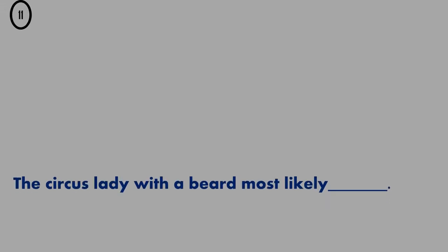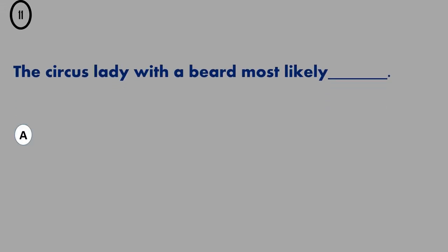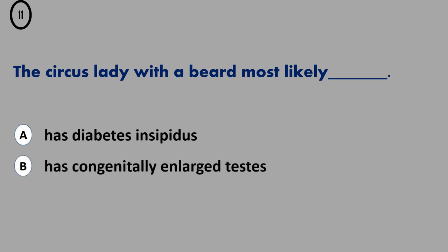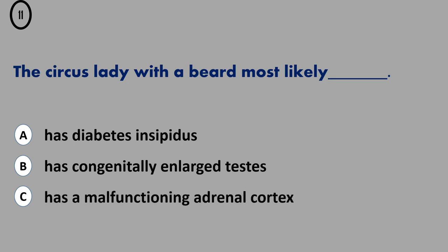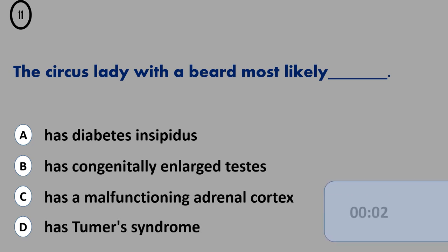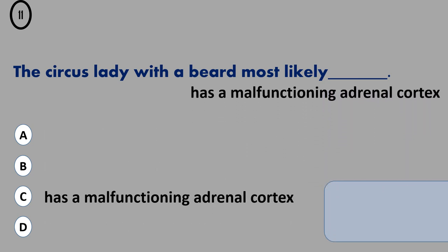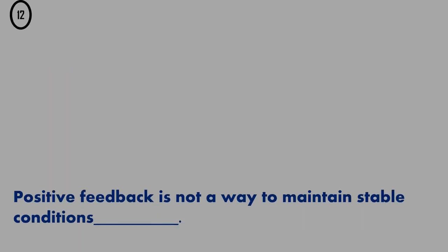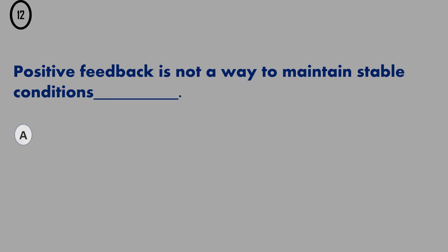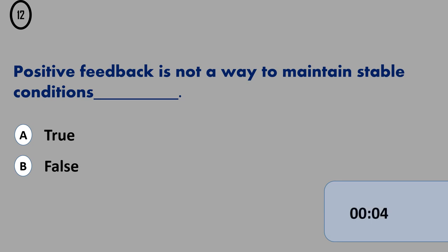Question 11. A. Has diabetes insipidus. B. Has congenitally enlarged testes. C. Has a malfunctioning adrenal cortex. D. Has tumors syndrome. The correct answer is...